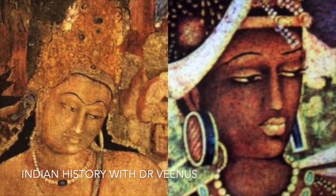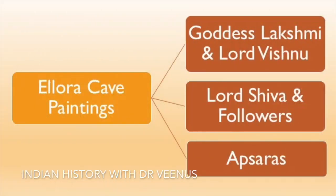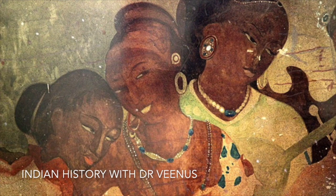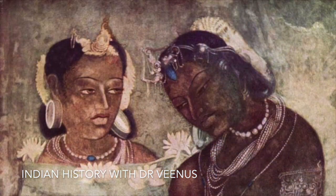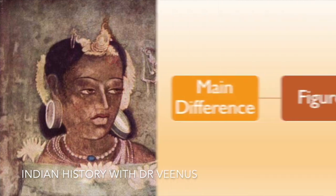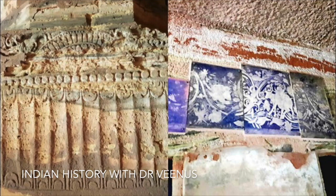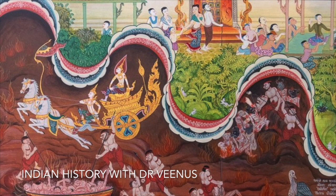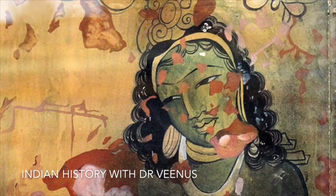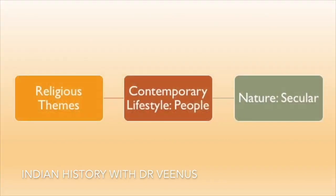Ellora Cave Paintings are newer compared to Ajanta. Prominent paintings include images of Goddess Lakshmi and Lord Vishnu, Lord Shiva with his followers, and beautiful Apsaras. Bagh Caves in Madhya Pradesh, representing an extension of the Ajanta School, have exquisite work ranking close to Ajanta in design, execution and decoration. The main difference is that figures are more tightly modelled with stronger outlines and are more earthly and human. Cave 4, known as Rang Mahal, has beautiful murals depicting Buddhist Jataka tales. These paintings depict religious themes in the light of contemporary lifestyle, and are thus more secular in nature.